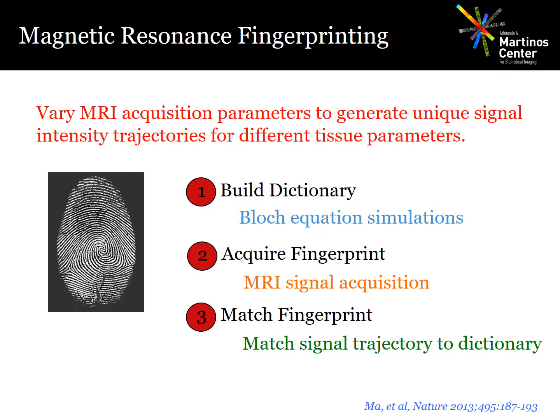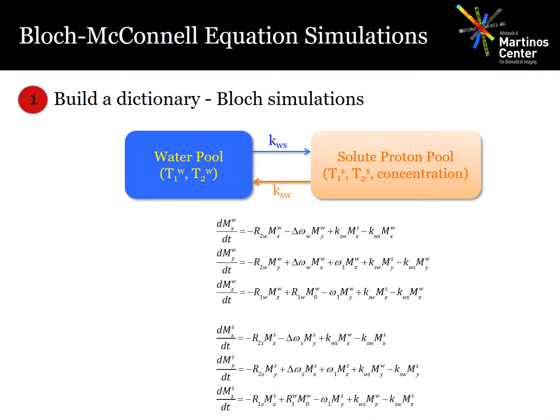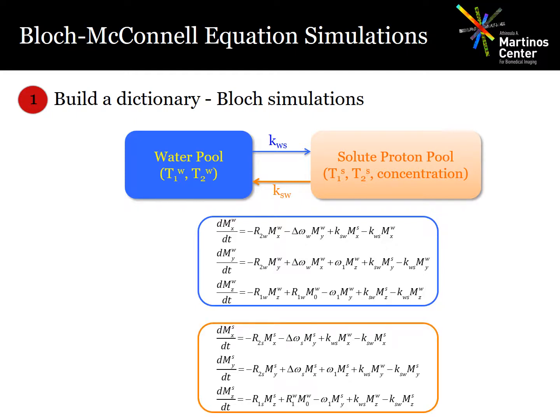The idea in MR fingerprinting is that by varying the acquisition parameters, we can cause a signal from different tissue types to be unique. But first, we need to build a database or a dictionary for all possible tissue parameter combinations. And then after we acquire the data, the signal that we acquire can be matched to the dictionary in order to determine the corresponding tissue parameter values. Normally in conventional MRF, we would use the Bloch equations to build the dictionary. But in CEST MRF, because we have to account for the exchange between the different proton pools, the model has to be modified, and what we use instead are the Bloch-McConnell equations.